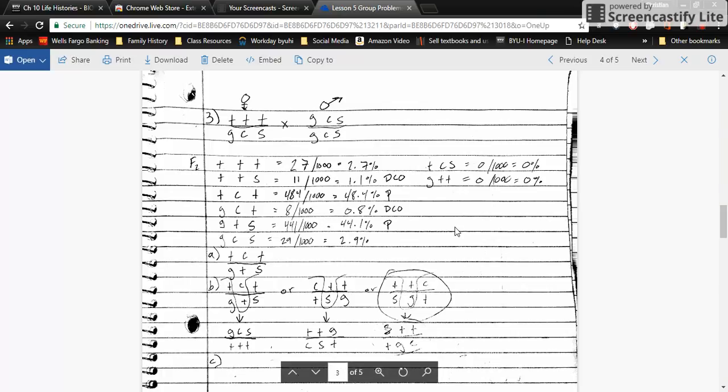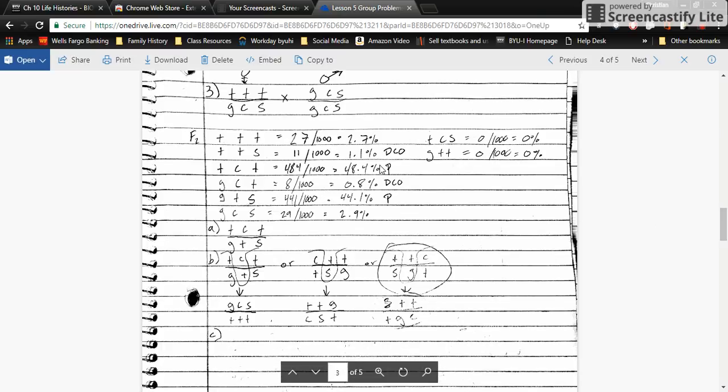And two copies of S. I copied down the results. I like putting in percentages because it helps me see it better: 2.7% of all wild, 1.1% of just S with the rest being wild, and so on.